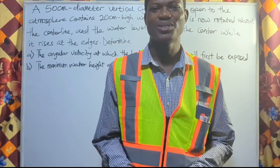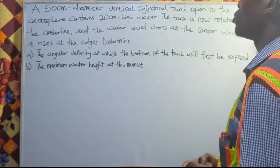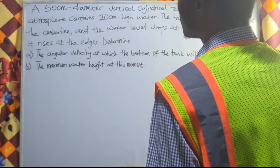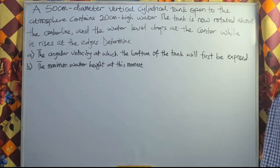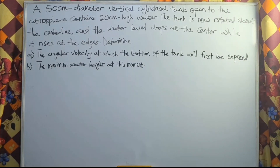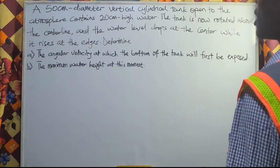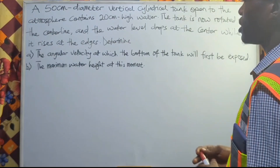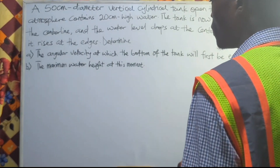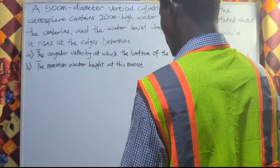Hello everyone, welcome back to this channel. In this video we are going to solve one more question on fluid in rigid body. The question says: a 50 cm diameter vertical cylindrical tank, open to the atmosphere, contains 20 cm high water. The tank is rotated about the center line and the water level drops at the center while it rises at the edges. Part A: determine the angular velocity at which the bottom of the tank will first be exposed. Part B: determine the maximum water height at this moment.